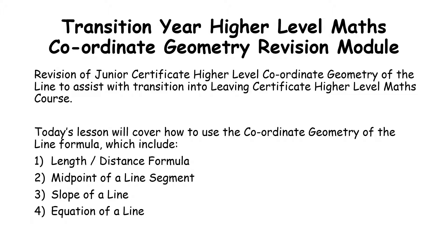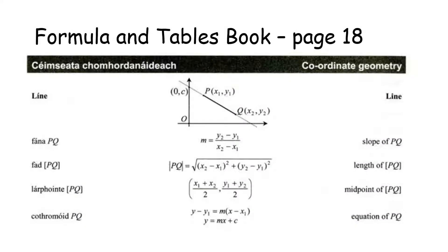The four different equations we're going to focus on are the length and distance formula, the formula for the midpoint of a line segment, the slope of a line, and the equation of a line. In your formula and tables book on page 18 we'll be working with this particular section. Everything beyond that will be covered in the Leaving Certificate Higher Level course, so all we need to be aware of for Junior Cert Higher Level is down to the equation of the line.